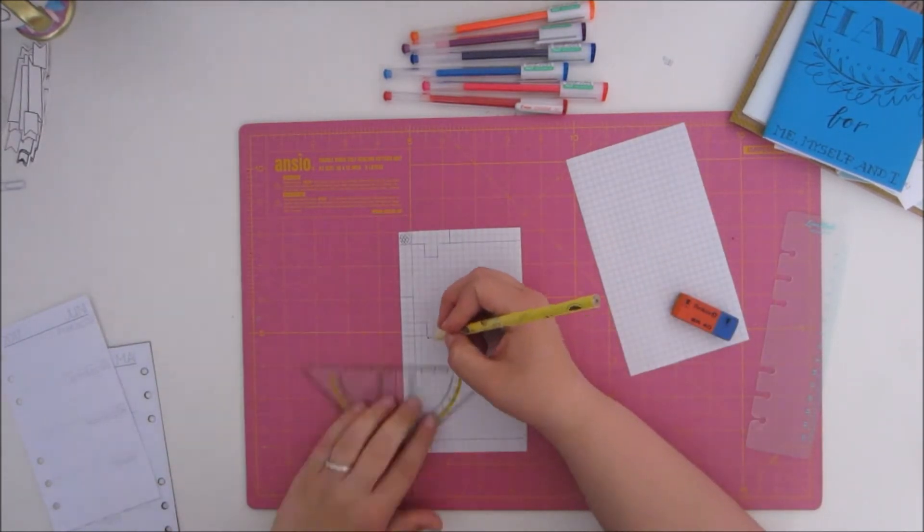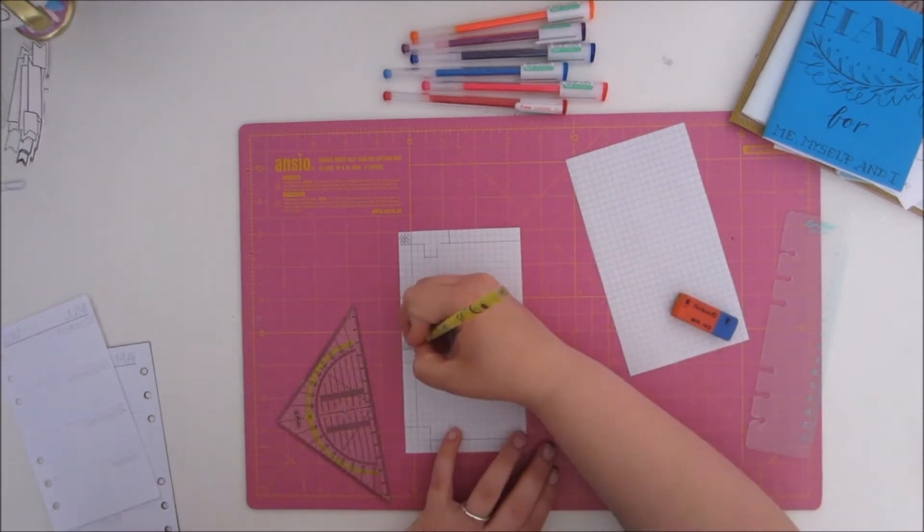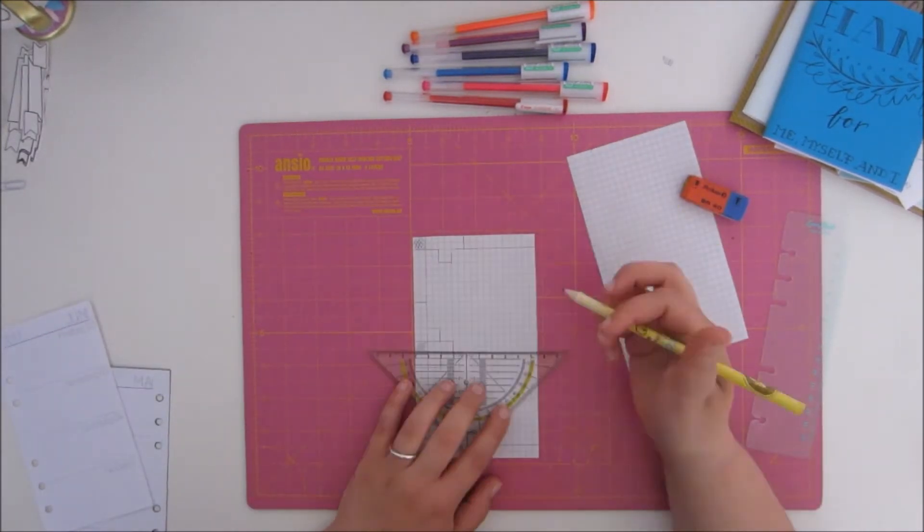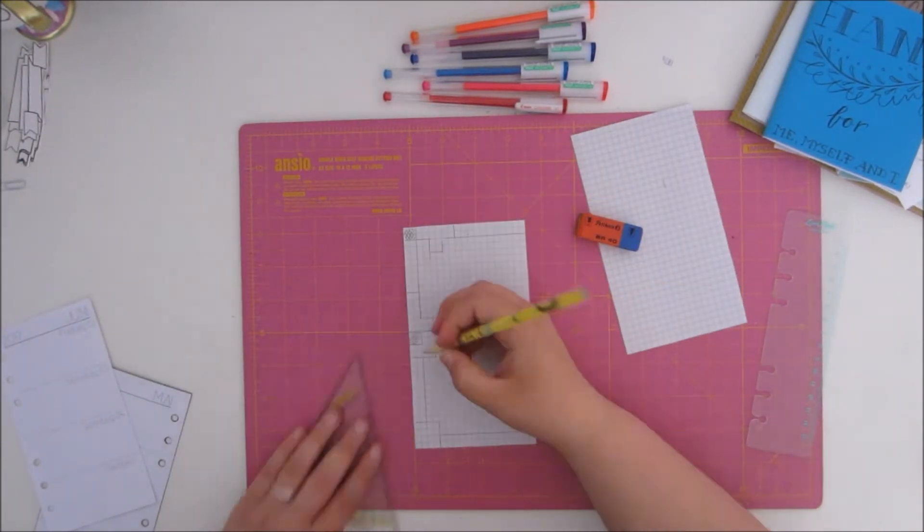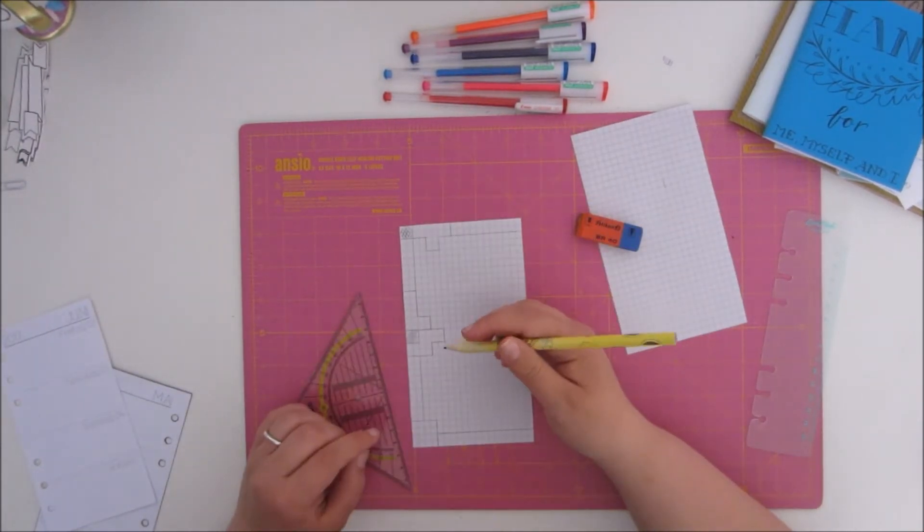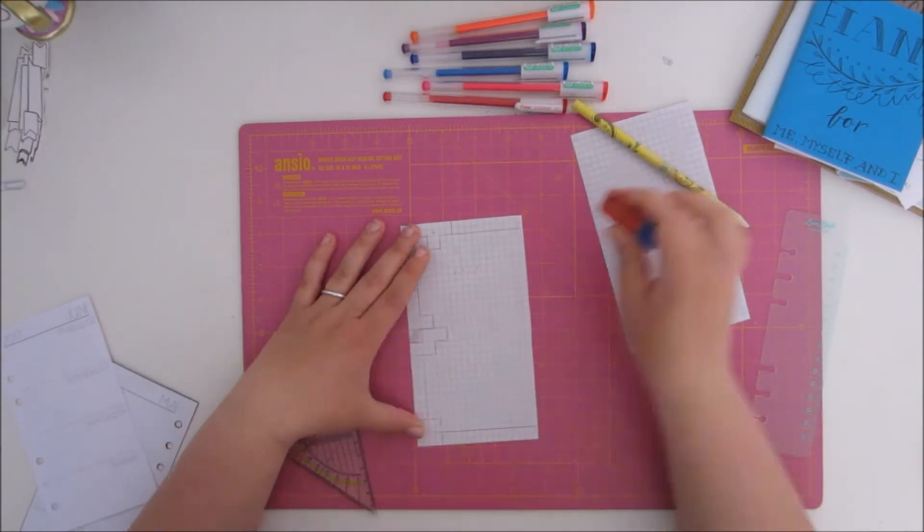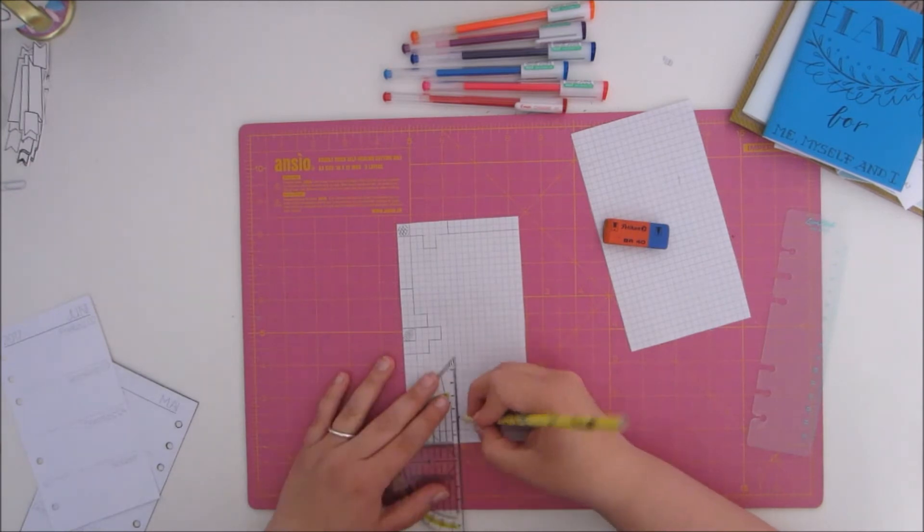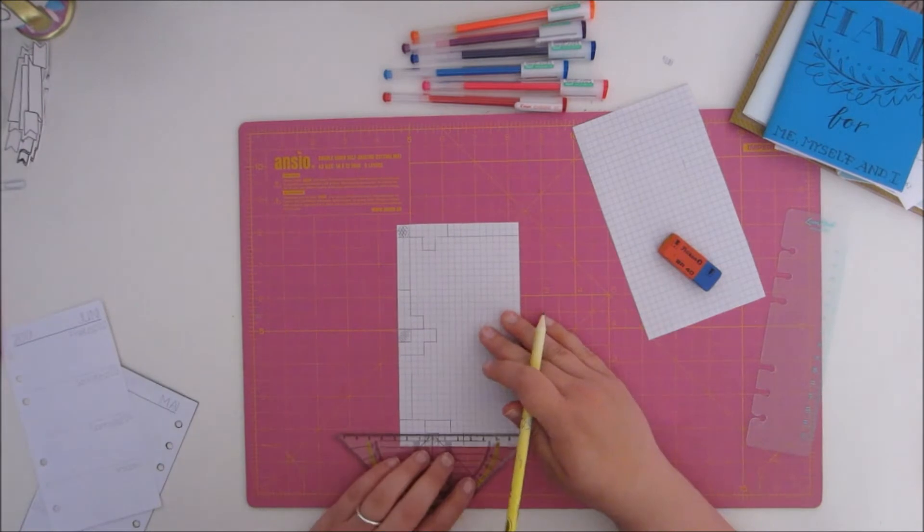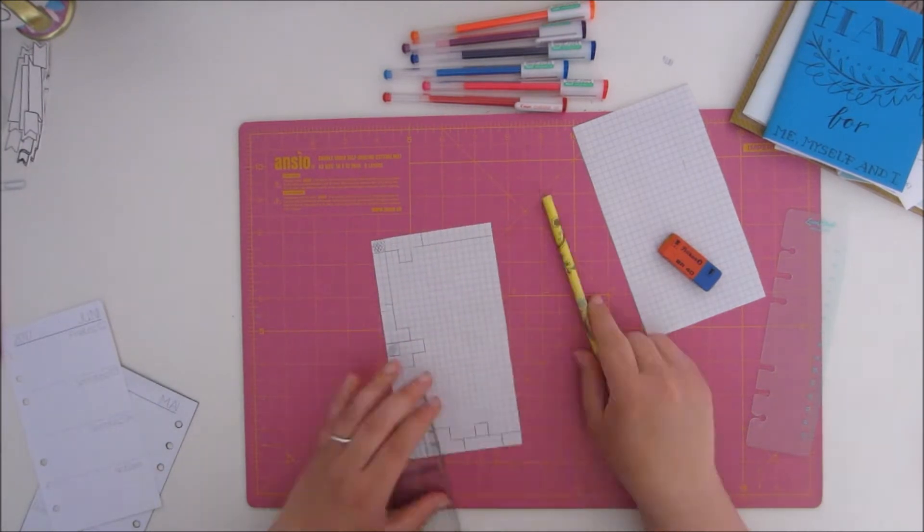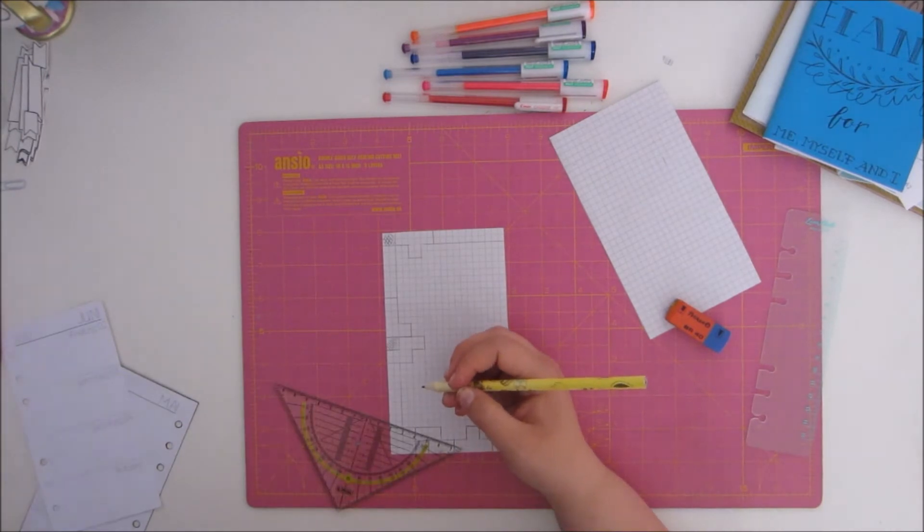And I drew them on two pieces of squared paper. Well, surprise, surprise. And these pieces of paper have the same size as my original calendar pages. And yeah, afterwards I colored them with my gel pencils from Pilot Choose.